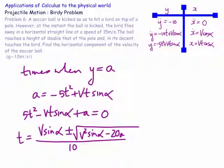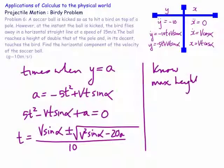We know it actually reaches a height of 2a when ẏ equals zero — it's at maximum height. So at max height we know that ẏ is equal to zero, and we also know that y is actually equal to 2a.